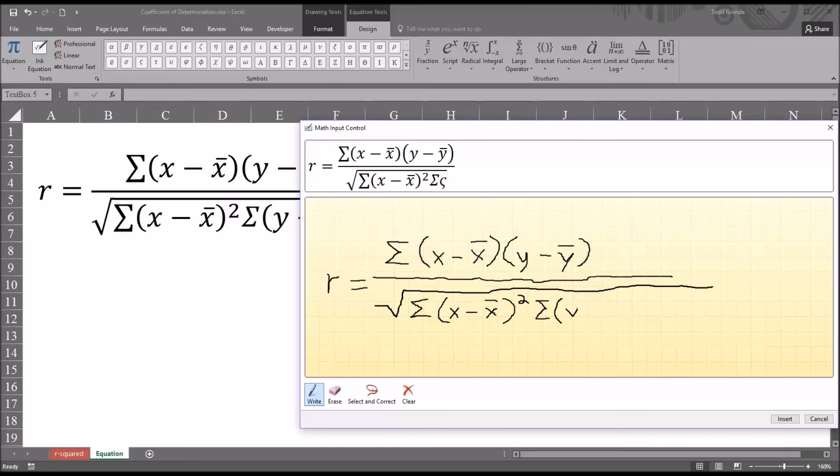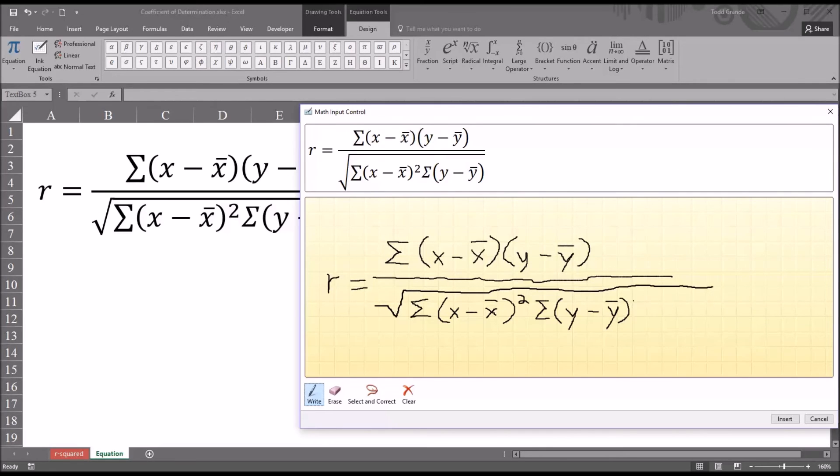And to Excel's credit, it does seem to be picking up most of the symbols as I intended. So Y minus Y bar. And close parenthesis. And then another 2. Now you'll notice here that these expressions are both squared. But in the preview, the 2 for Y minus Y bar is much higher than X minus X bar. But I'm not going to worry about that either. I'm just going to insert the equation.